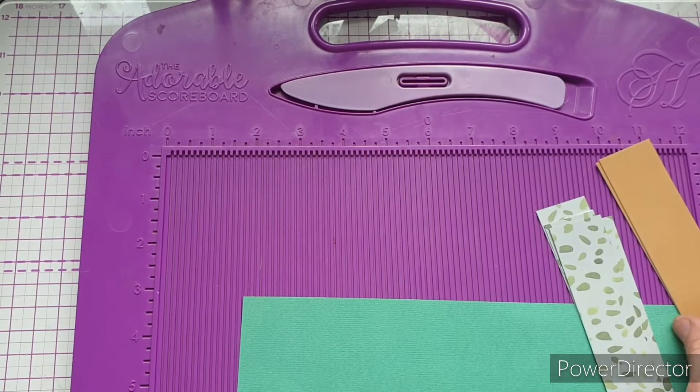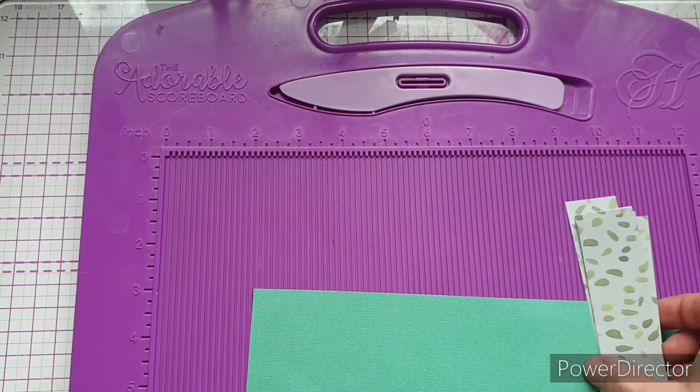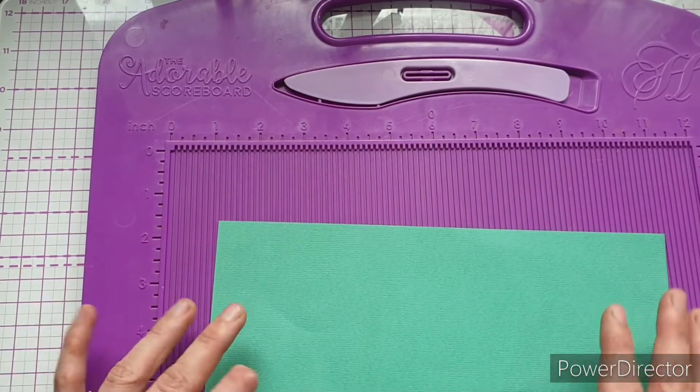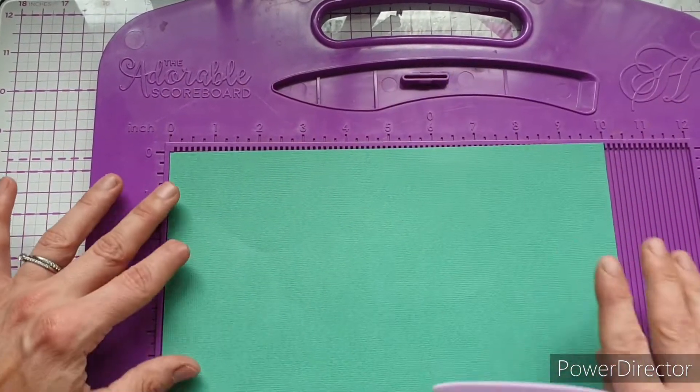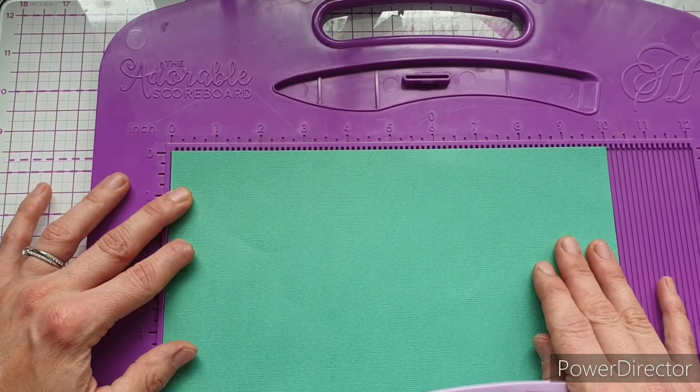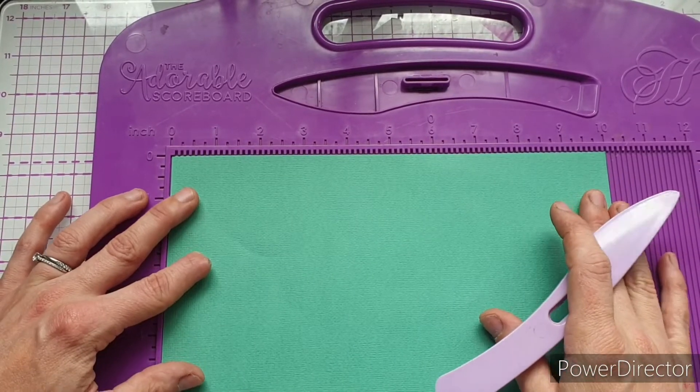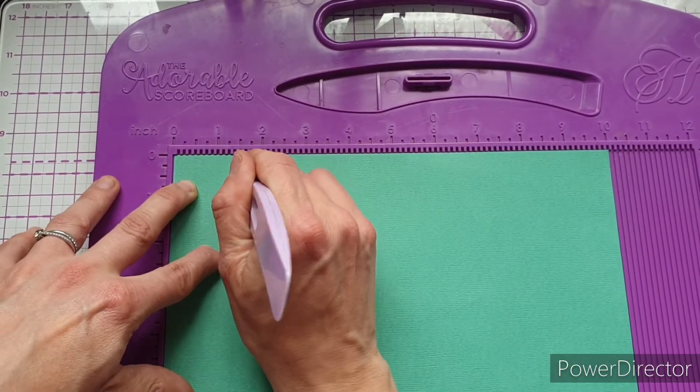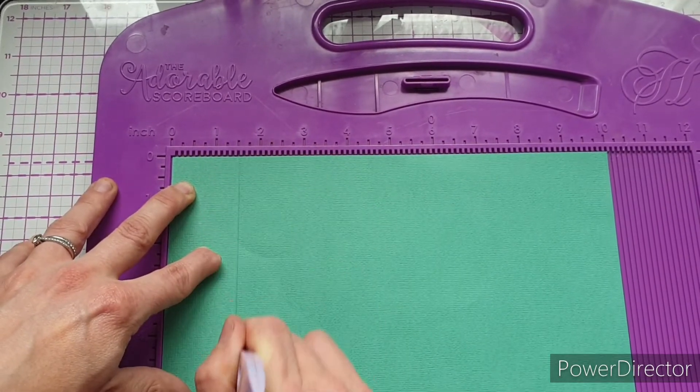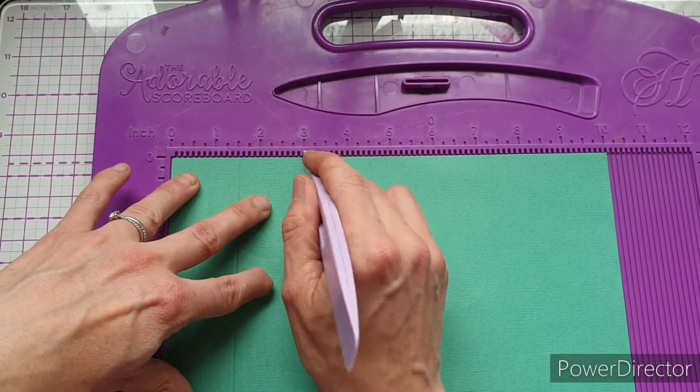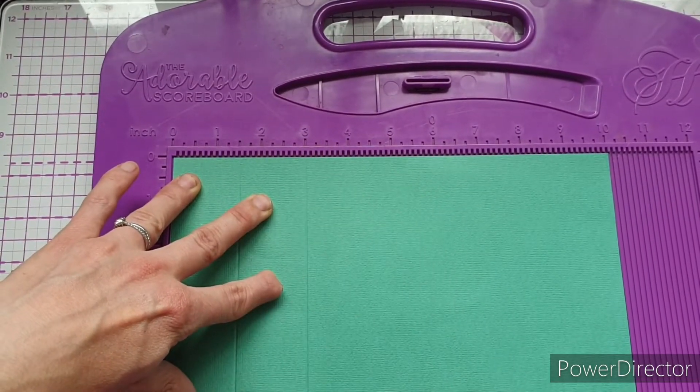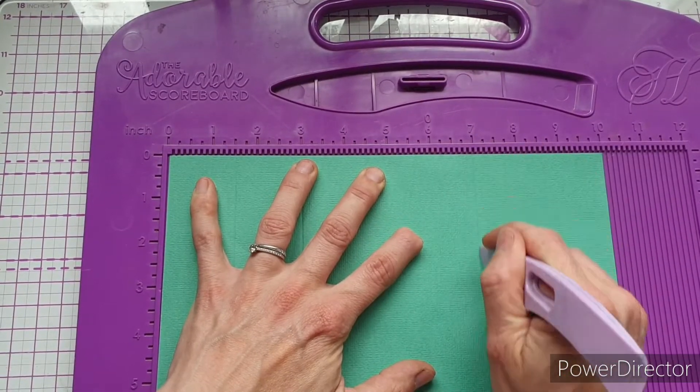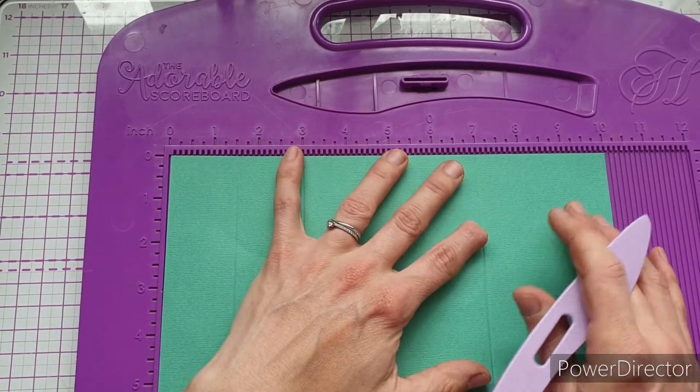Originally I got measurements from Becky's Place, the A to Z of card folds - I'll link that in the description box - but then I've tweaked it and played with it and come up with what I'm going to show you today. On your card base we need to do some scoring. Put it on your scoreboard with the 10 inch side along the top. We're going to score at one and a half, at three, at seven, and lastly at eight and a half. This is all in inches.